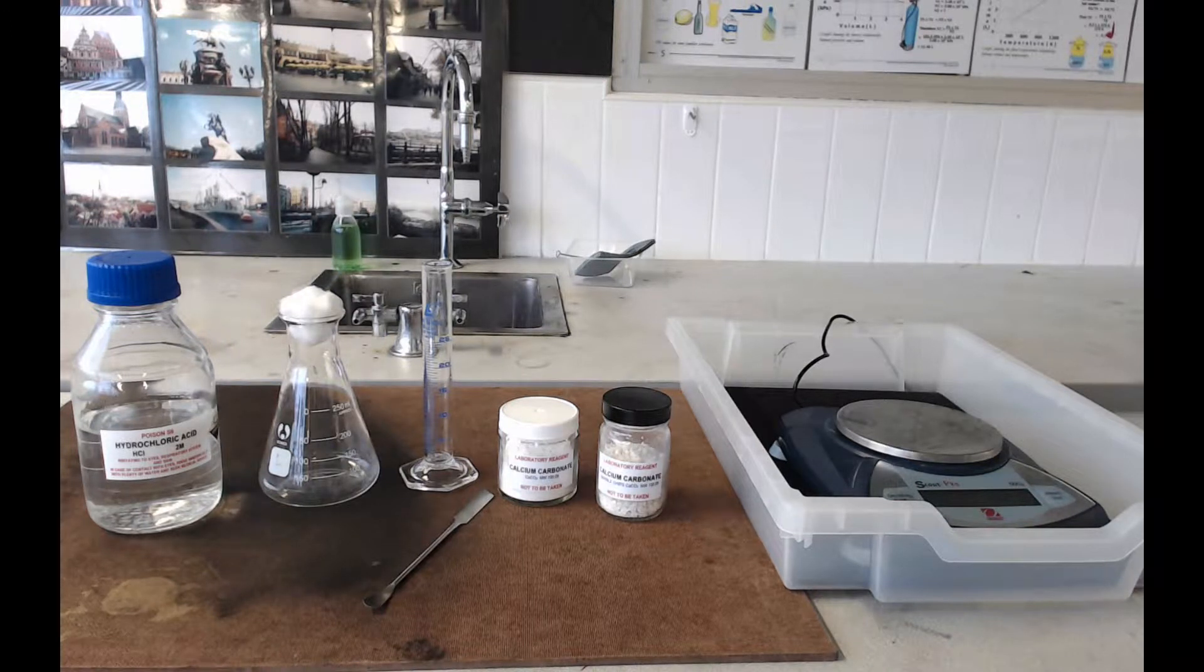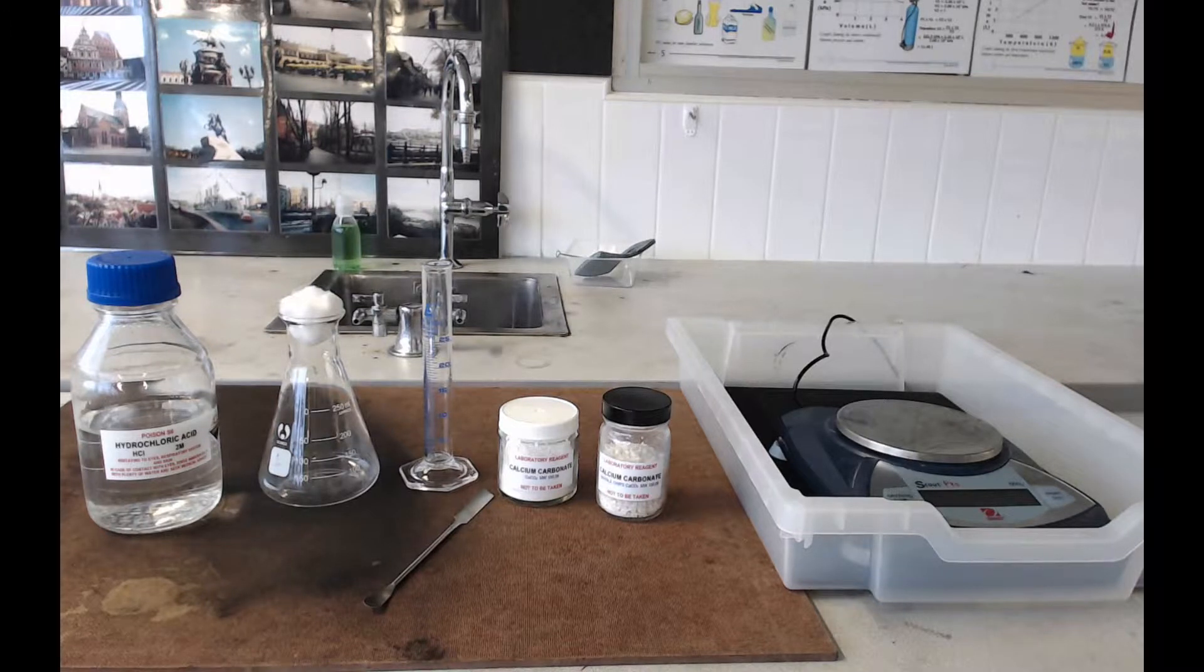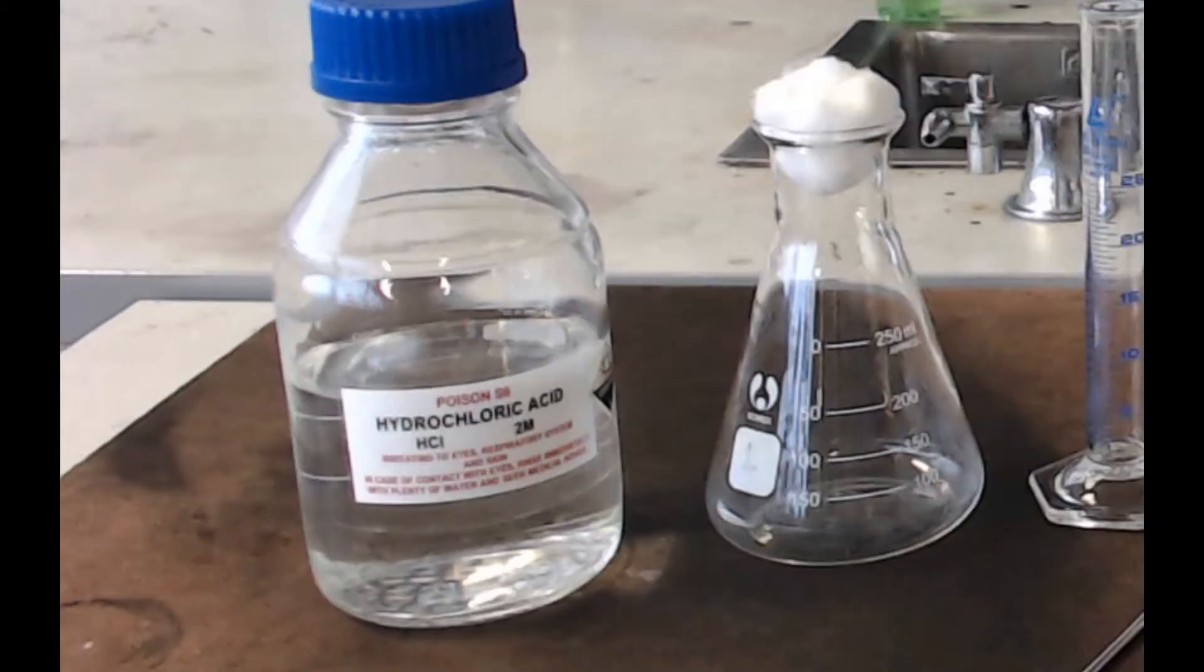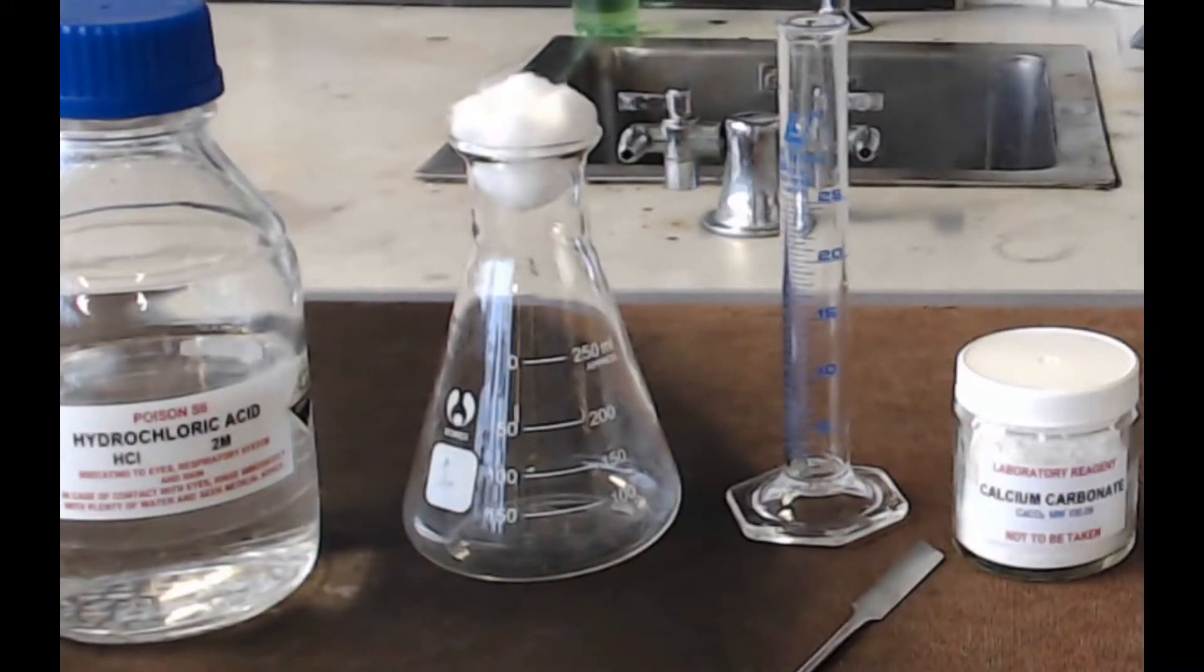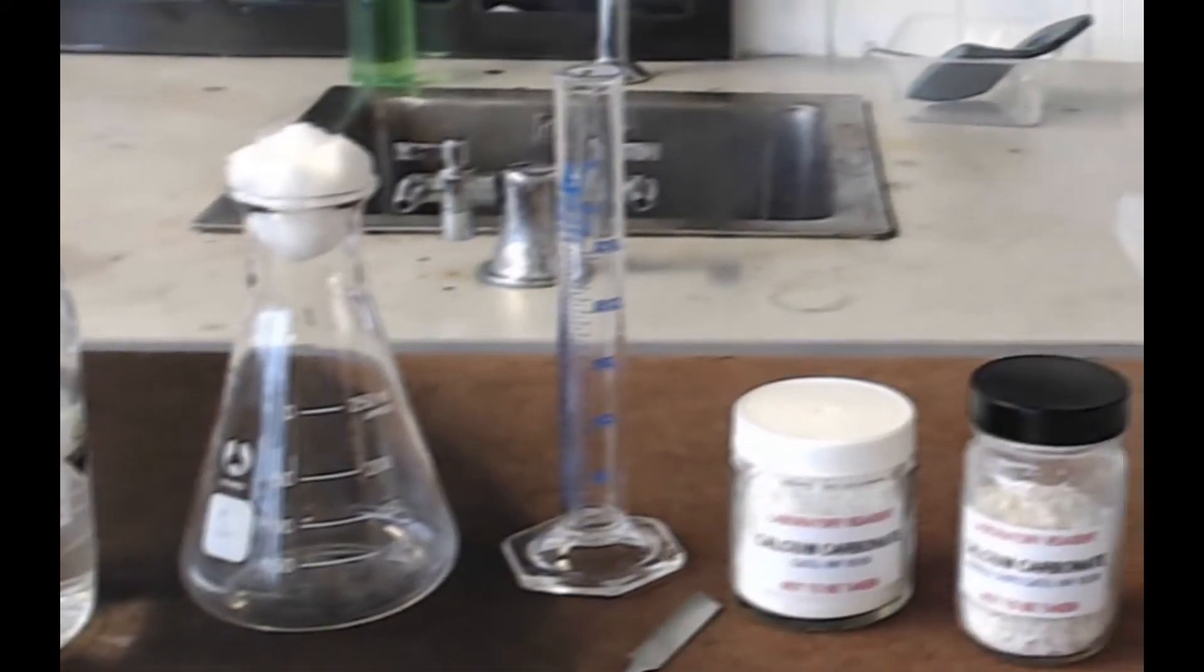Now it's not a difficult experiment to set up, here are the things you're going to need for it. You're going to need some 2 mol per litre hydrochloric acid, you're going to need a conical flask with a cotton wool bud to fit on top, a measuring cylinder,